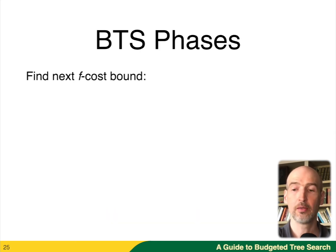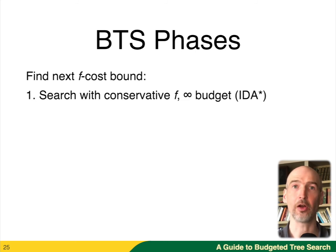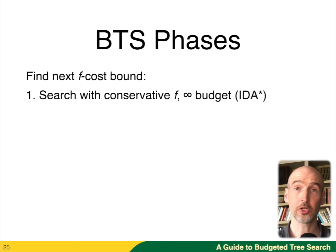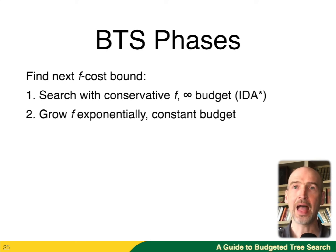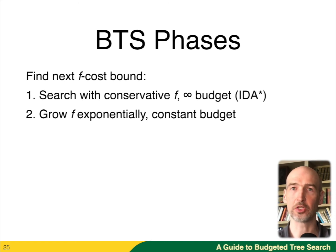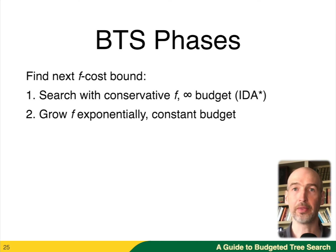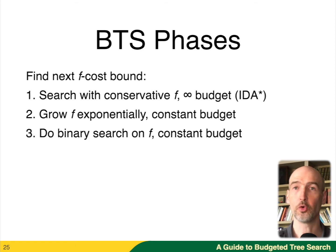So how does BTS work? First, we just run IDA* — that is, we use the minimum F cost possible. If we have a problem where IDA* is the right thing to do, we'll just use IDA* every step and we'll see the exponential growth. The behavior of BTS in this case is exactly identical to IDA*. However, if IDA* fails with the conservative F cost to grow the number of nodes exponentially, then we're going to start growing the F cost exponentially with a constant budget. If we find the desired F cost within the budget we're done, but if we exceed our budget, then we'll do a binary search.